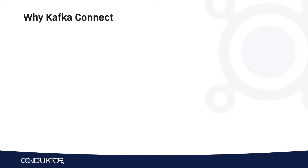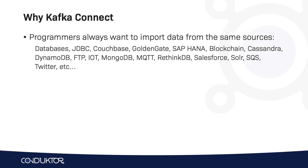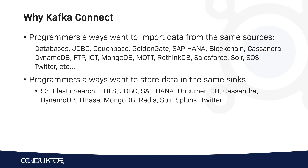Kafka Connect is a way to import data from common sources into Kafka, and there are Kafka connectors for everything. For example, databases, JDBC, Couchbase, GoldenGate, SAP HANA, Blockchain, SQS, MongoDB — all these technologies have a Kafka source connector. And we can also send data into the same destinations: Amazon S3, Elasticsearch, HDFS, Twitter, MongoDB, Redis — all these kinds of things are destinations that we commonly send data to.